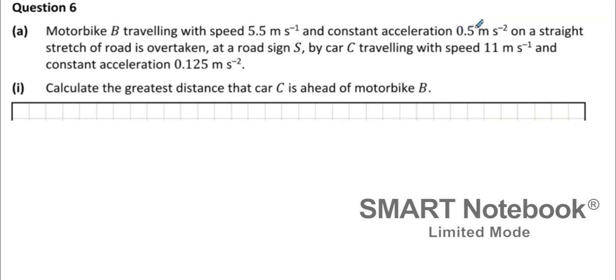Motorbike B travelling with speed 5.5 meters per second and constant acceleration 0.5 on a straight road is overtaken at a road sign S by car C travelling at speed 11 meters per second and constant acceleration 0.125. Calculate the greatest distance car C will be ahead of motorbike B.